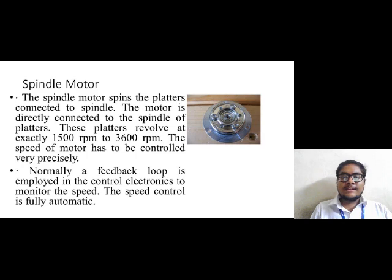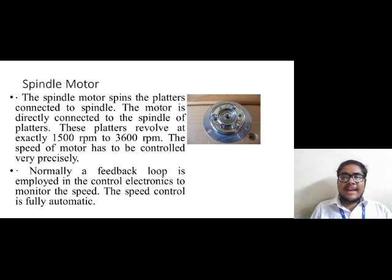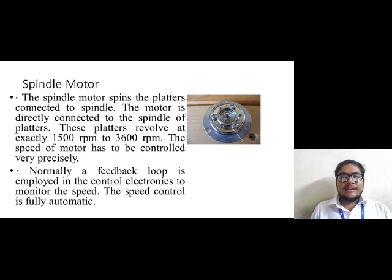Now we will discuss spindle motors. The spindle motor spins the platters connected to the spindle. The motor is directly connected to the spindle of the platters and helps in moving them. They have revolution speeds of around 1500 to 3600 revolutions per minute. The speed of the motor is controlled automatically.